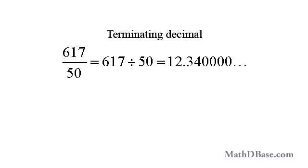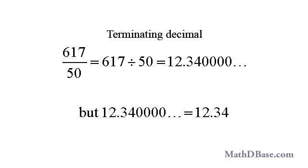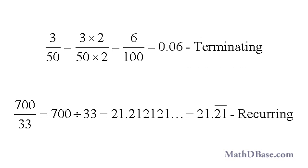Terminating or finite decimals are decimal numbers with a finite number of digits. In other words, after a certain number of digits, they stop. For example, 617 divided by 50 equals 12.34. Since the zeros do not affect the value of the number, they can be left off. Any fraction can be expressed as either a recurring or a terminating decimal.